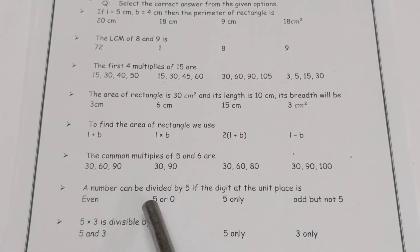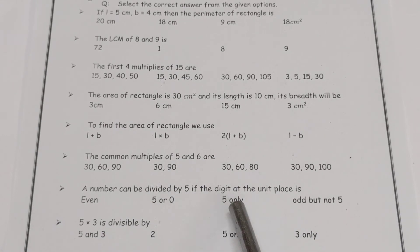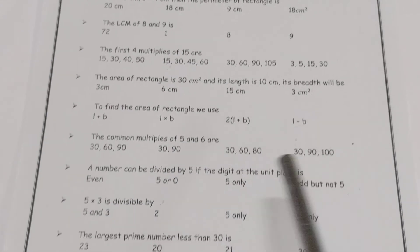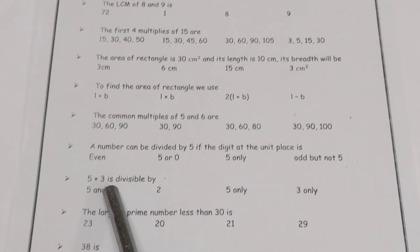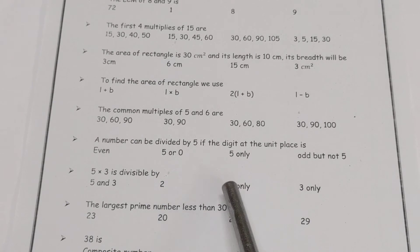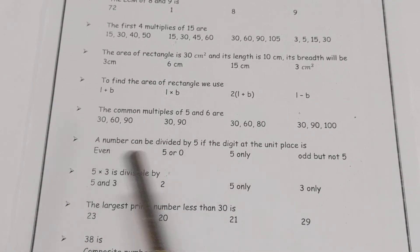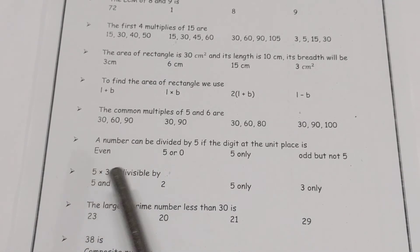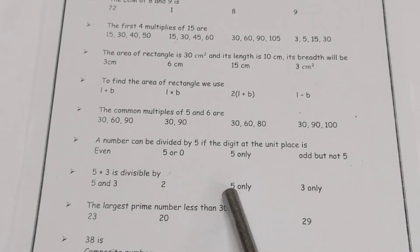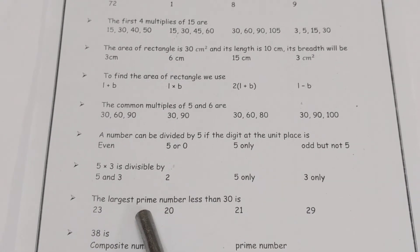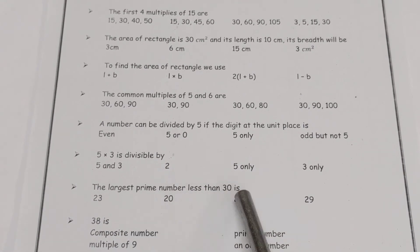A number can be divided by five if the digit at the unit place is — options are: even, five, four, zero or five only, odd but not five. Also, 5 multiplied by 3 is 15 — check whether 15 is divisible by five and three, by two, by five only, or by three only.